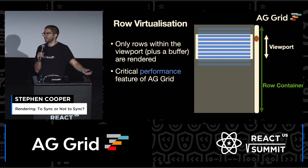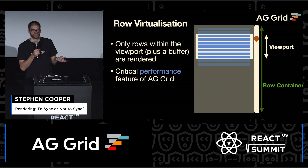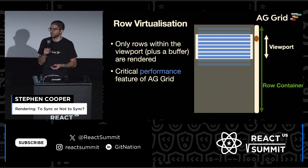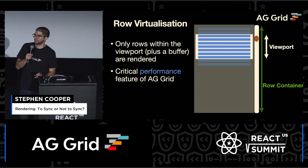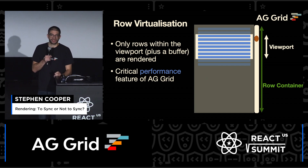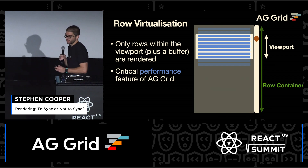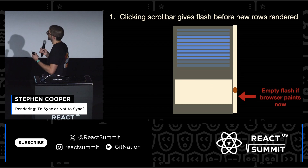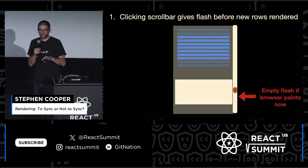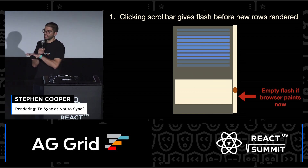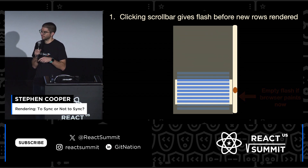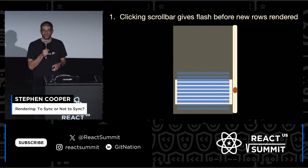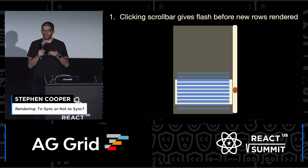Row virtualization is a critical performance feature for any data grid. If you want to show thousands of rows, you don't want to render all of that in HTML because you're going to crash your browser and the experience is going to be really slow. The main thing is you don't want to overload the browser because drawing HTML is quite expensive. So we only render the rows that are actually visible in the viewport. A way to imagine the scrolling is: we scroll, the viewport changes, and if the browser gets to repaint, it's going to repaint an empty grid because the rows haven't been updated yet, and then the rows get updated based on the new position of the viewport.